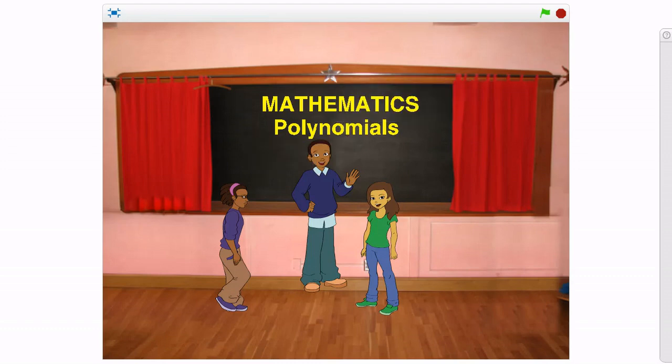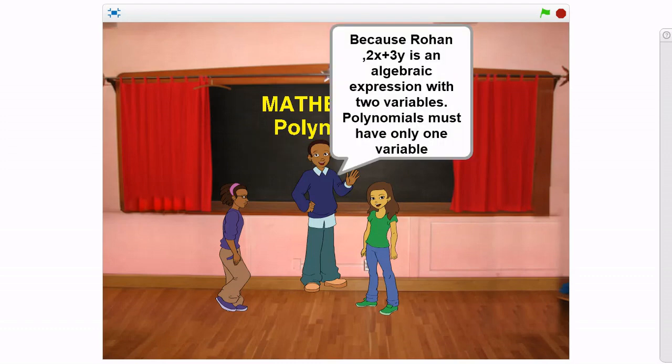But why, sir? Because, Rohan, 2x plus 3y is an algebraic expression with two variables. Polynomials must have only one variable.